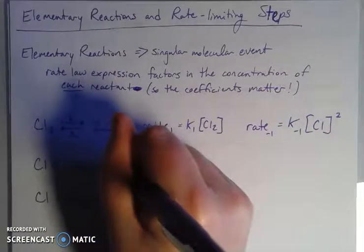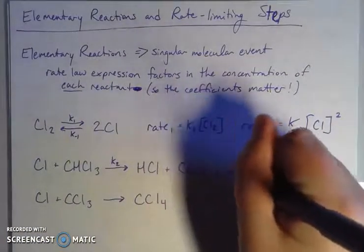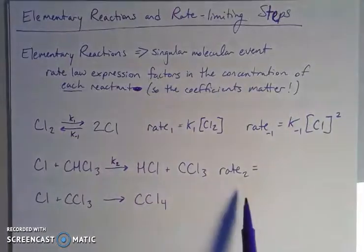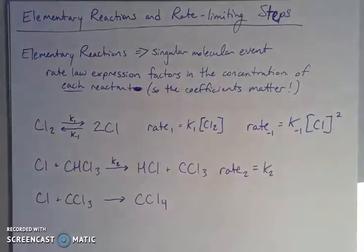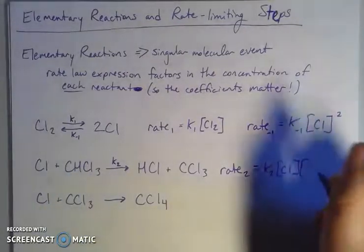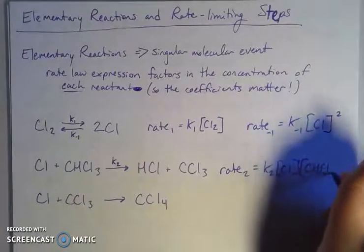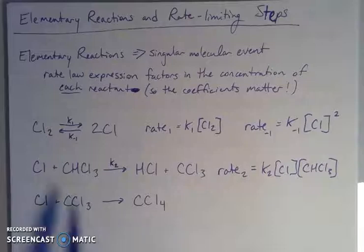Let's take the second reaction. The rate of this second process is going to be the rate constant k₂ times the concentration of my chlorine atom times the concentration of my CHCl₃. There is one of each of those in this process, so these are each raised to the first power. That would be my rate expression for this elementary process.